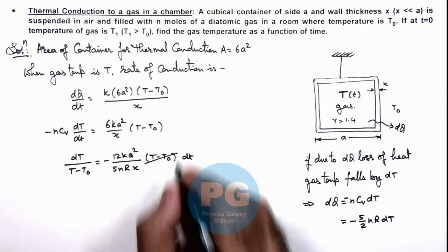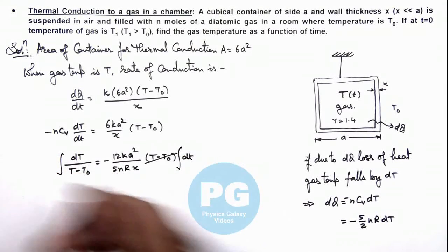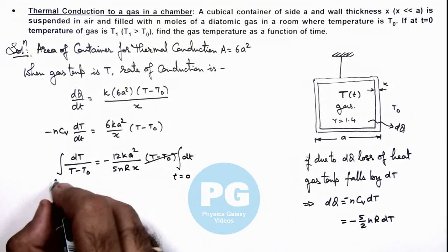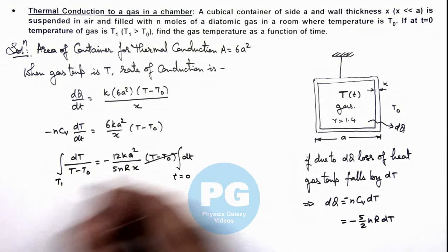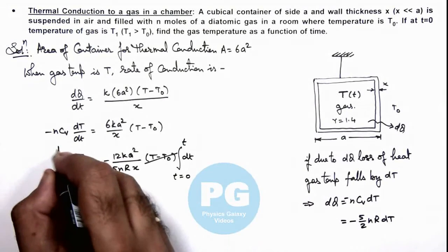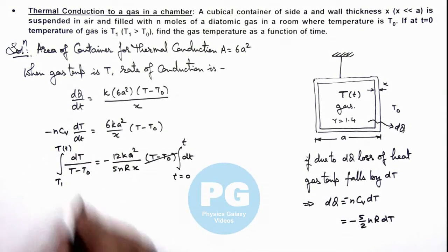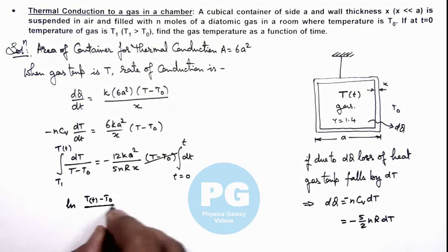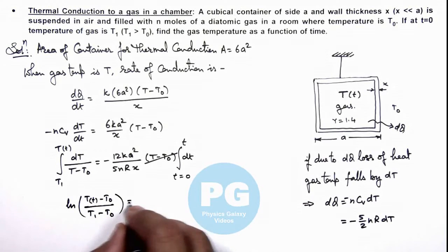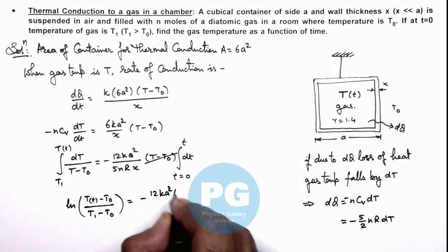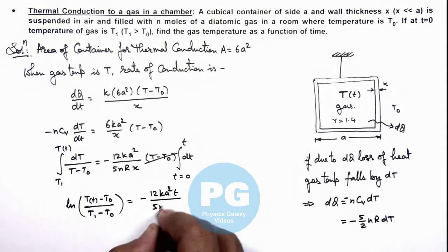So if I integrate these terms, here you can see that at t equal to zero, the temperature of gas was given as T₁, at a general time t it changes to T as a function of time. Now on integrating this, it is giving us ln of - I can directly substitute the limit - so this T as a function of time minus T₀, divided by T₁ minus T₀, is equal to minus 12ka²t/(5nRx).